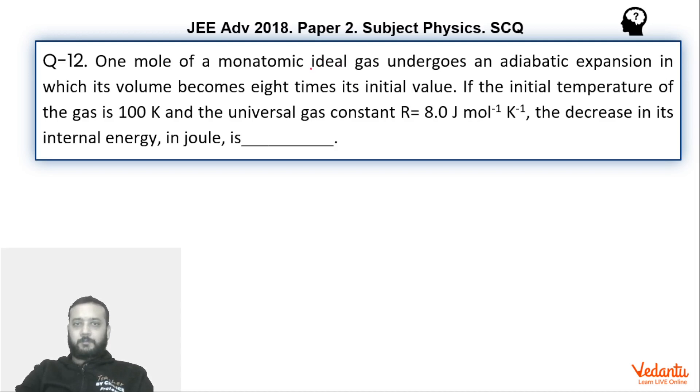In this question there is one mole of monatomic gas undergoing adiabatic expansion until its volume becomes eight times its initial value. The initial temperature has been given as 100 Kelvin. We have to take the gas constant as 8. So we have to find the decrease in internal energy.